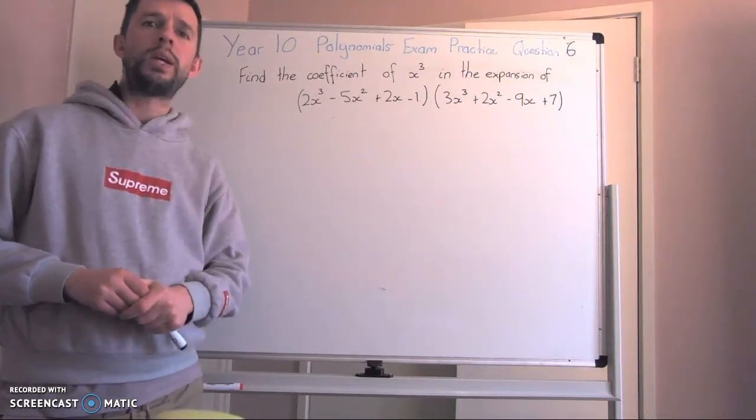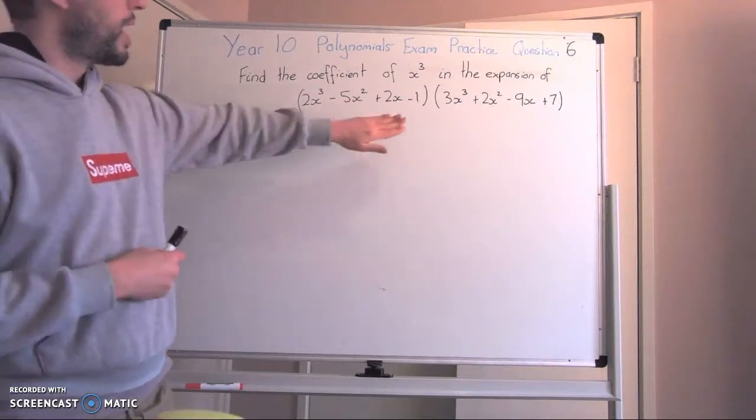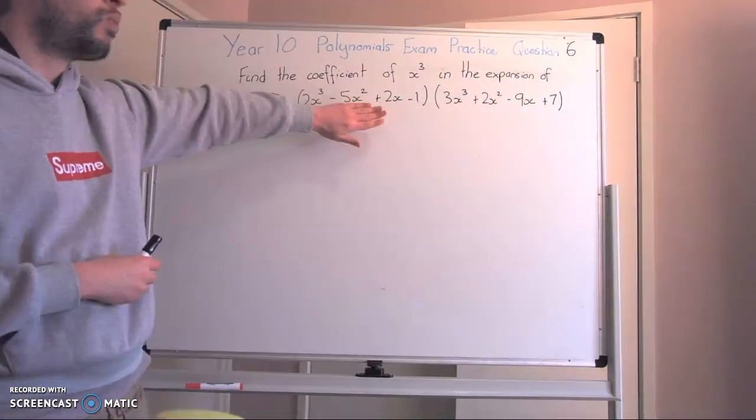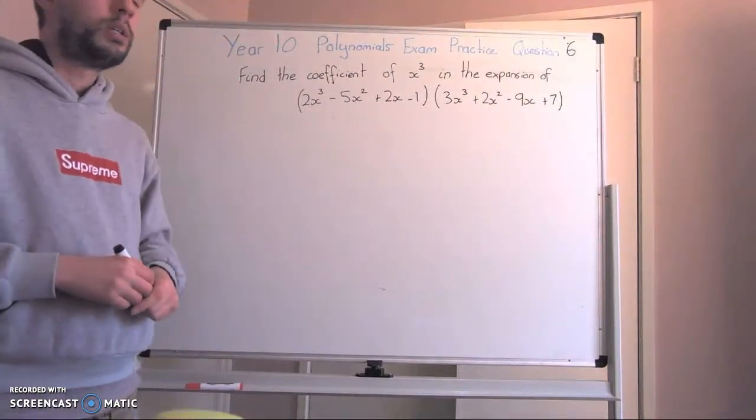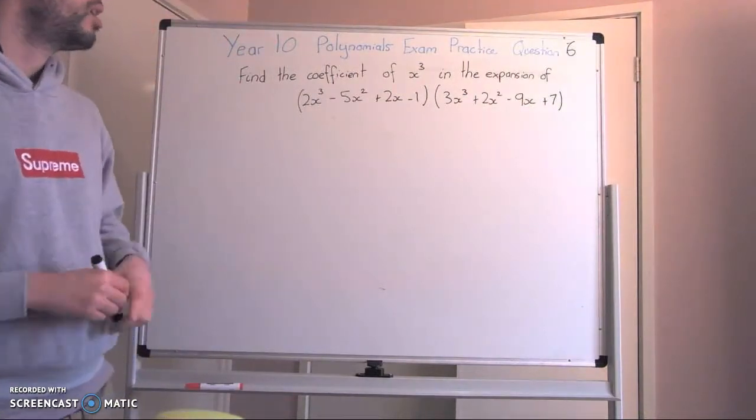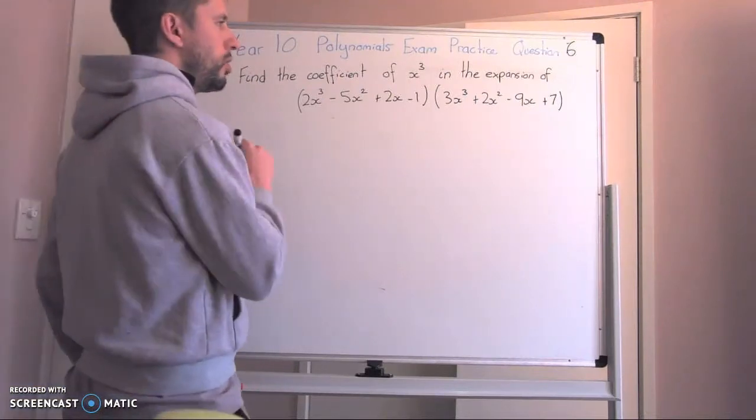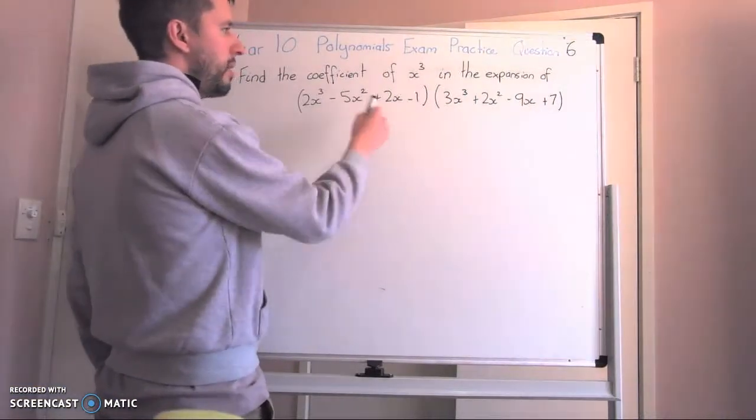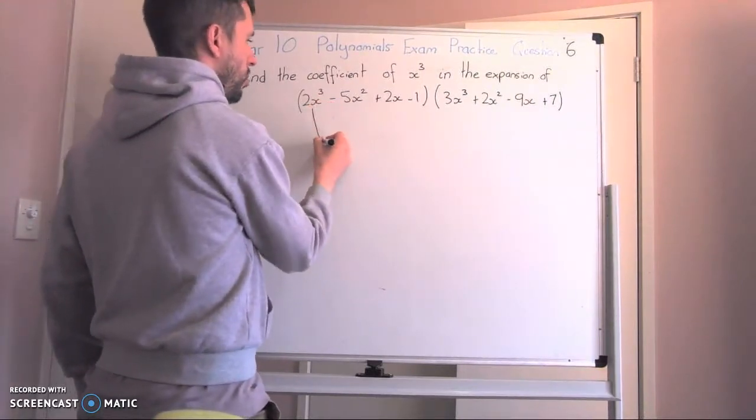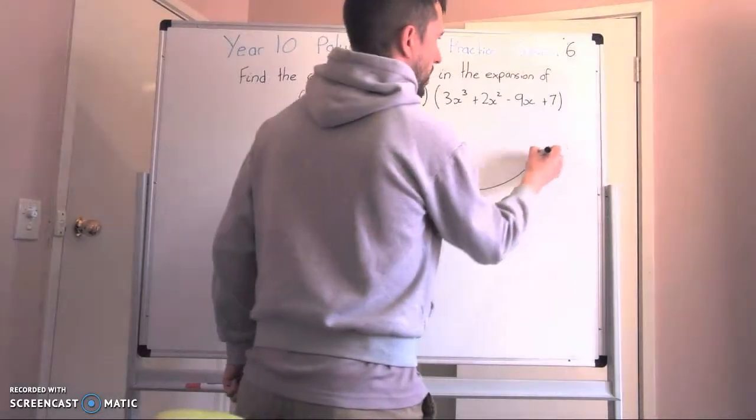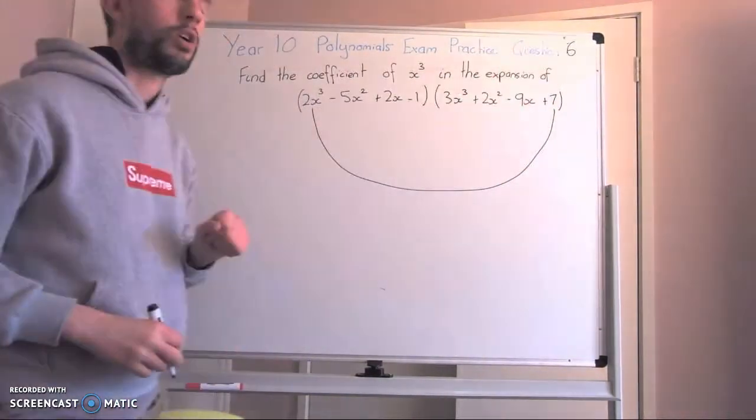So there's two ways we can go about this when we're thinking about where we've got two brackets times in it. Everything in one side must times with the other. So we can see straight away when we're going to have x³. I can see here that if this 2x³, the only thing I'm going to get to be a power 3 is when I times it with the constant.